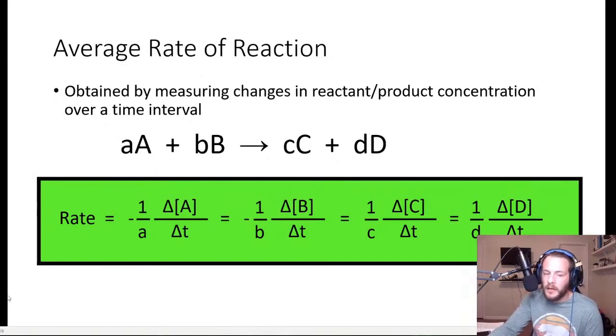For any general reaction, if you want to calculate the rate of that reaction, let's say that our reaction is in the form of this formula where we have a moles of A reacting with b moles of B to produce c moles of C and d moles of D. The rate is going to be equal to all of these different quantities over here.